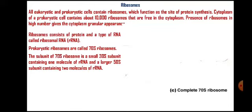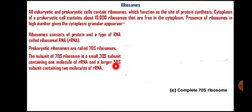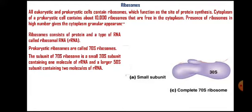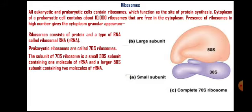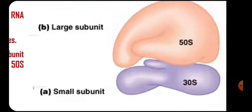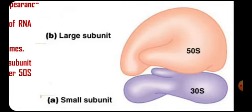Remember that 50 plus 30 does not equal 70 — these are sedimentation coefficients, not additive numbers. 30S is the rate of sedimentation of the smaller subunit and 50S is the rate of sedimentation of the larger subunit. These two combine with each other, and during protein synthesis, mRNA binds to the ribosome and the ribosome moves along the mRNA. That is the composition of the 70S ribosome.